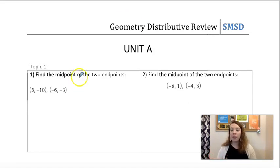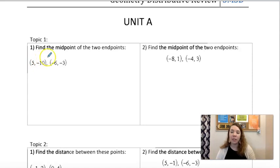So the midpoint of two endpoints. Midpoint is just kind of like it sounds, the middle. So if I have these two points, I have to find the middle of 5 and negative 6. To do that, I can add them together and divide by 2.